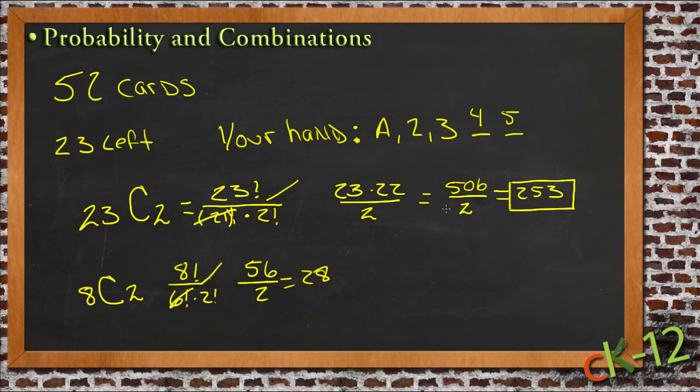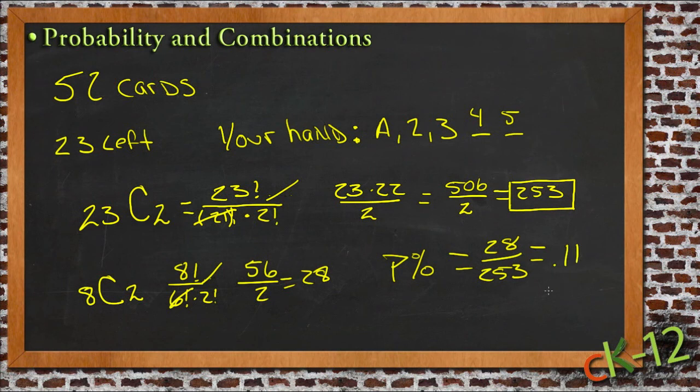So your chances of being able to make this work would be twenty-eight divided by two hundred and fifty-three. So the probability of it happening as a percent would be twenty-eight over two hundred and fifty-three, which is point one one. And as a percent, that's about eleven percent. So your chances of it happening would be about one in ten, about eleven percent, of being able to get the two cards you want out of the remaining twenty-three cards in the deck.